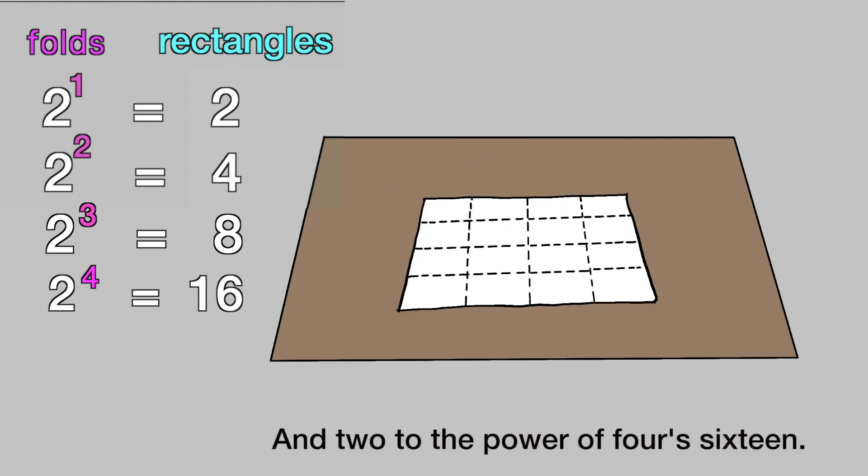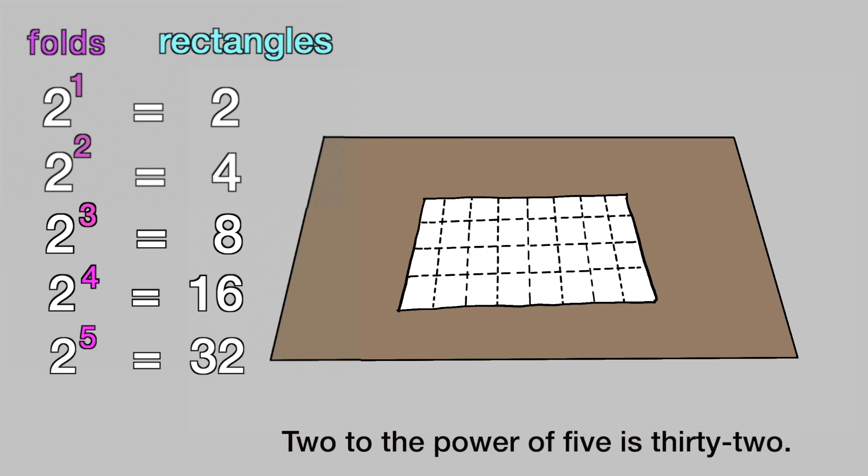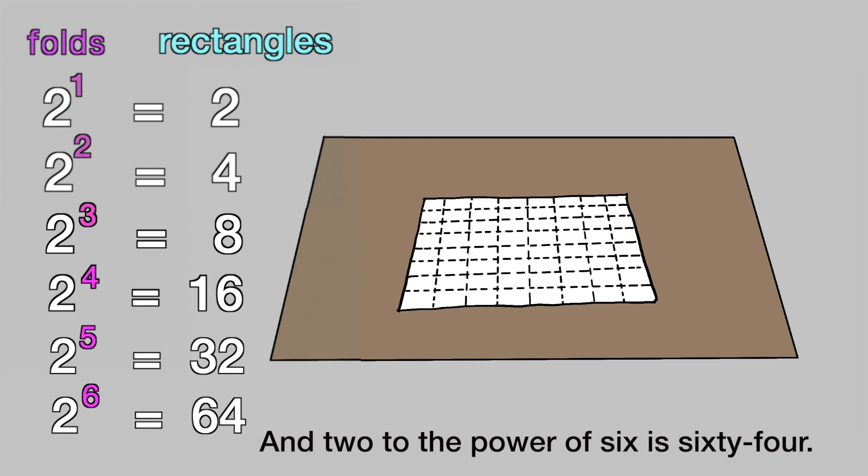2 to the power of 4 is 16. 2 to the power of 5 is 32. 2 to the power of 6 is 64.